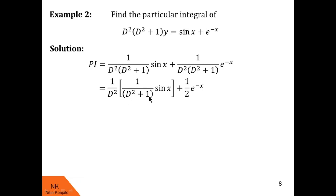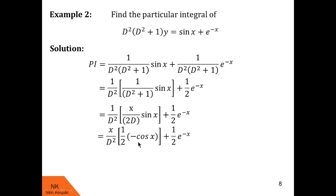Since φ(minus a²) = 0, we put x in the numerator and take the derivative of the denominator, giving x/(2d) of sin x. Here 1/d of sin x means integration of sin x, which is minus cos x. So we have x/2 × (minus cos x). Then operating 1/d² on minus cos x, we replace d² by minus 1, the two minus signs give plus, so we get x/2 × cos x. The complete particular integral is x/2 × cos x + 1/2 × e^(minus x).